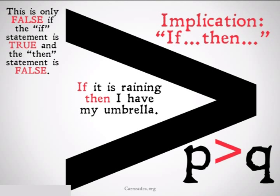It's important to note that statements like this are only false if the if statement, the antecedent, the P part of the statement is true, and the then statement, the consequent of the statement, the Q part of the statement is false. In all other cases, it's going to be true.